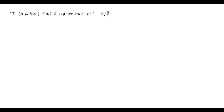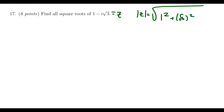Our best bet to compute these square roots is to put this complex number into polar form first. So let's say this complex number is z — what would be the modulus of z? The modulus would be the square root of 1 squared plus the square root of three squared, which gives us the square root of one plus three, or the square root of four, which is two. So the modulus is two.